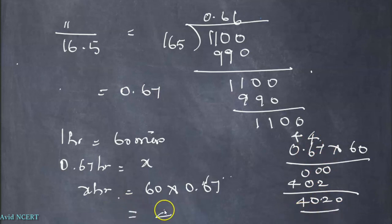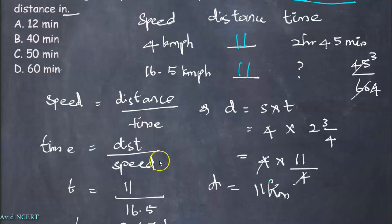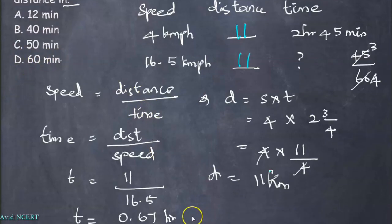So this equals 40 minutes. The answer is B, 40 minutes. That is, 0.67 hours equals 40 minutes.